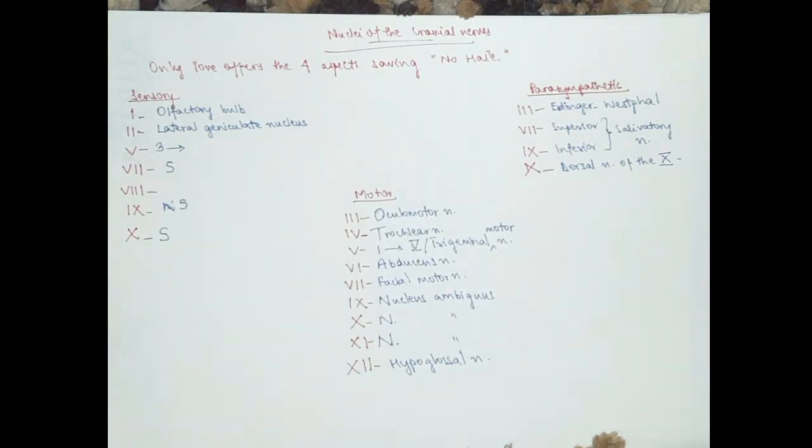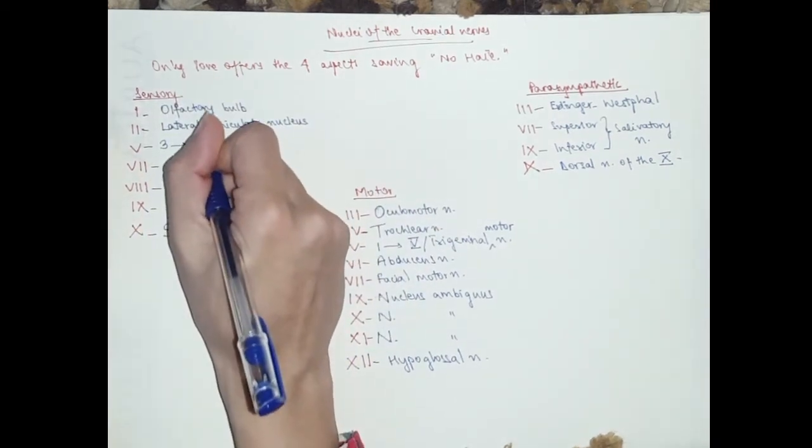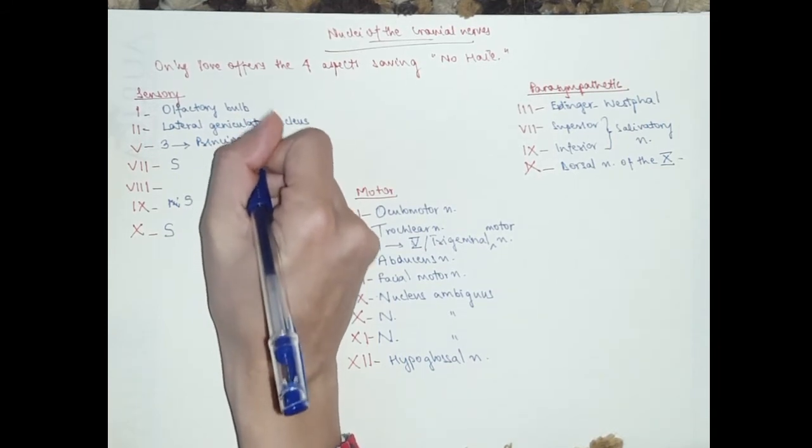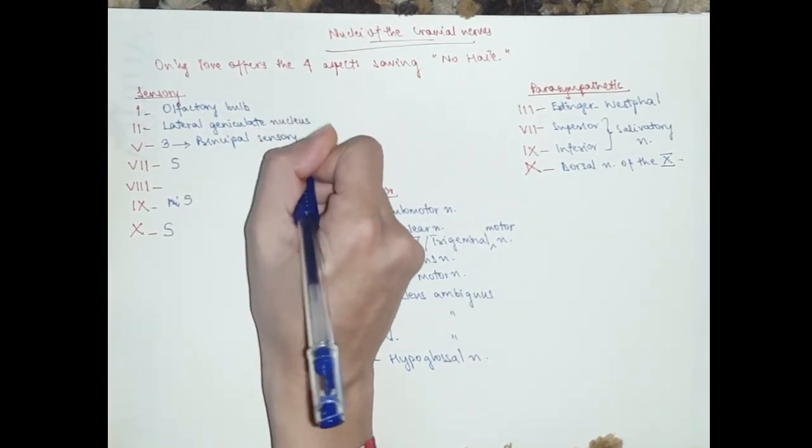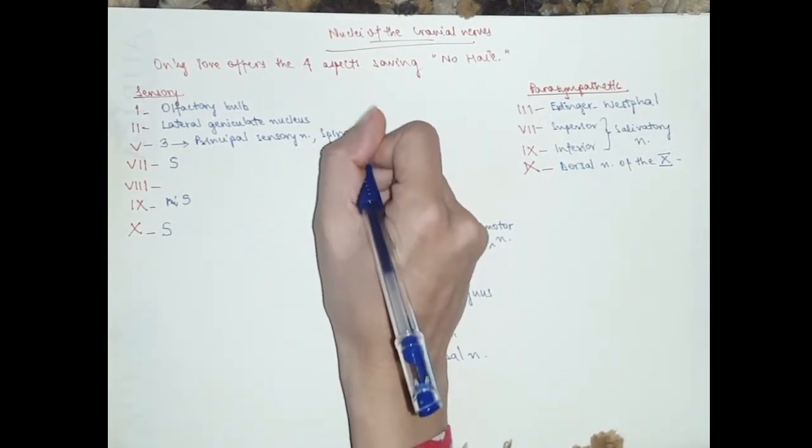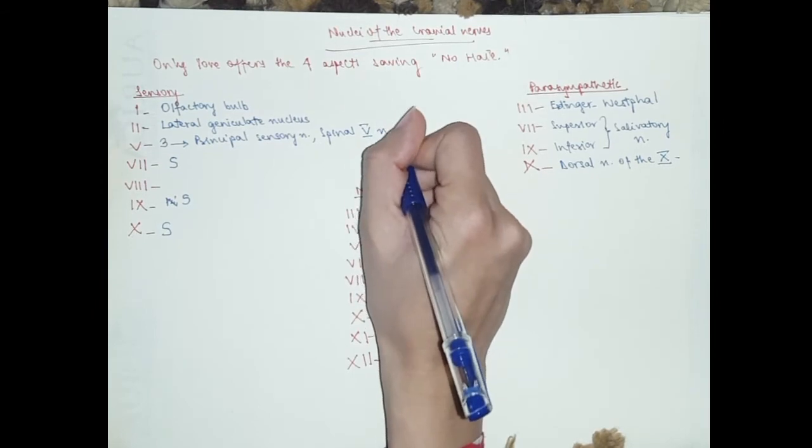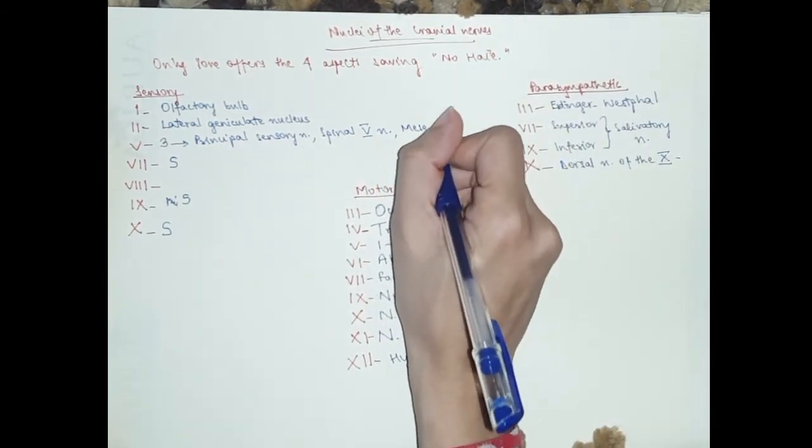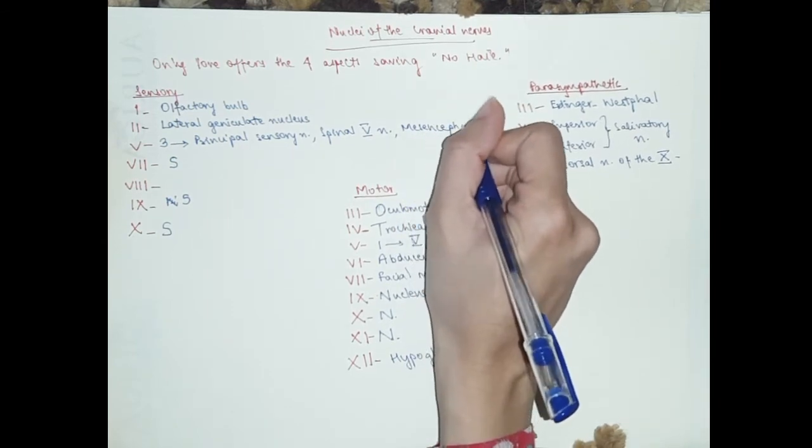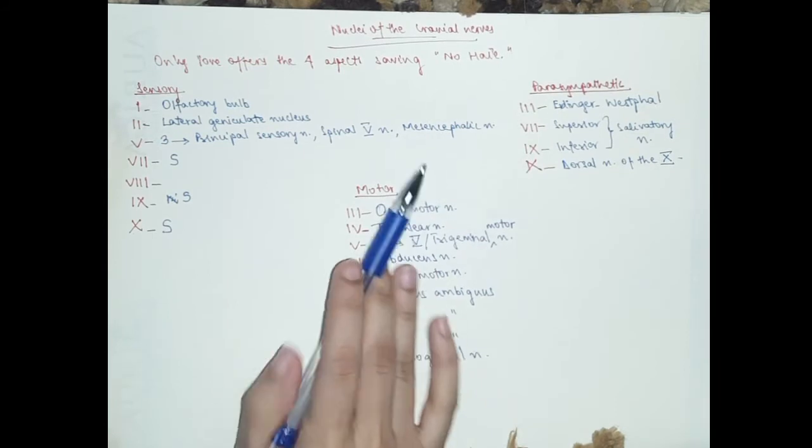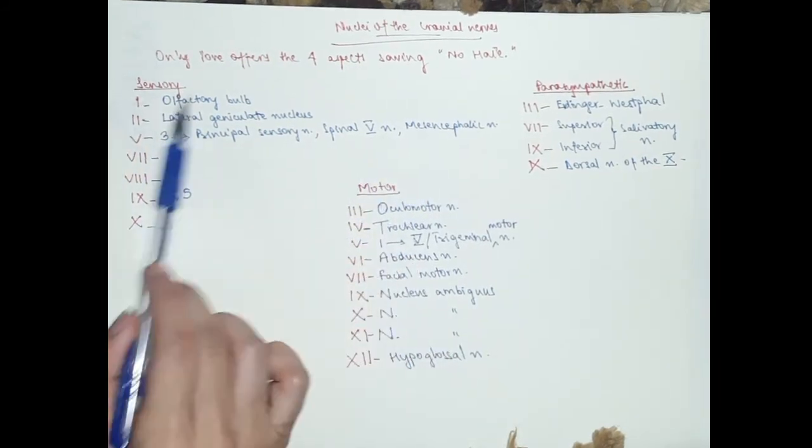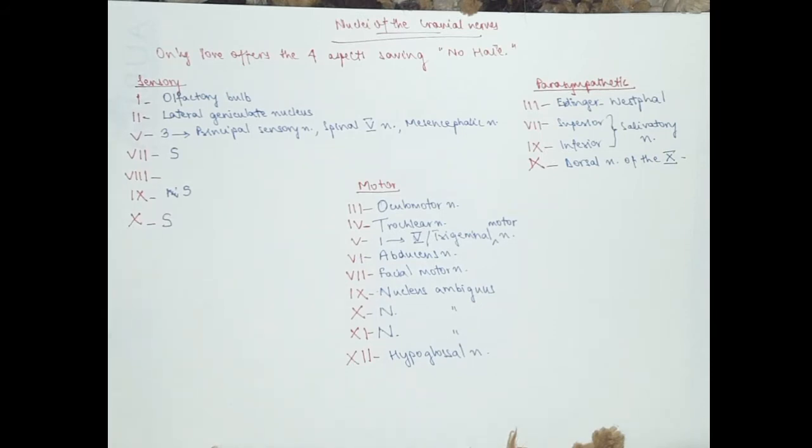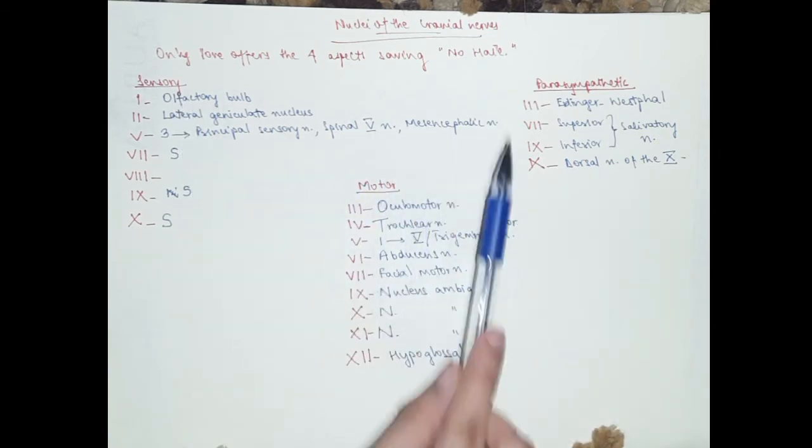Then you've got number five, which has got three sensory nuclei. You've got the principal sensory nucleus, the spinal trigeminal nucleus, and the mesencephalic nucleus. Now, the mesencephalic nucleus is sensory, but it is involved with reflex proprioception of the periodontium and muscles of mastication in the jaw. So it functions to prevent biting down hard enough to lose a tooth.